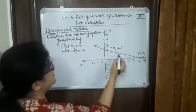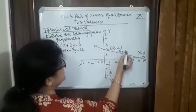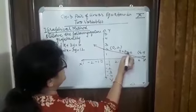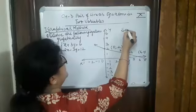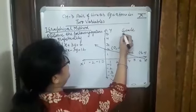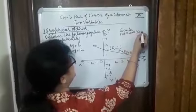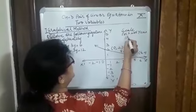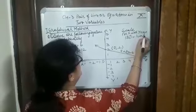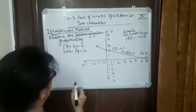This is the first line which is x plus 3y equal to 6. Now the scale: for x and y, one big division is equal to 1 unit.